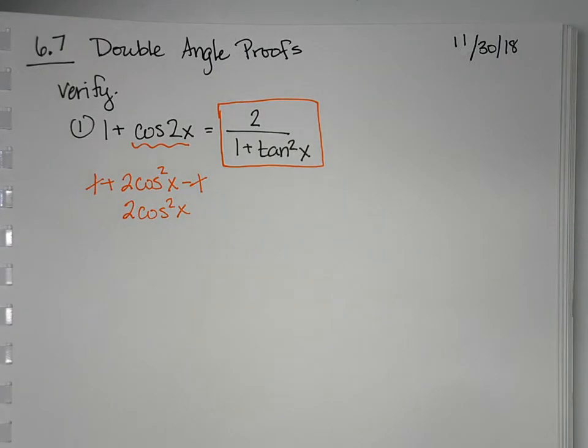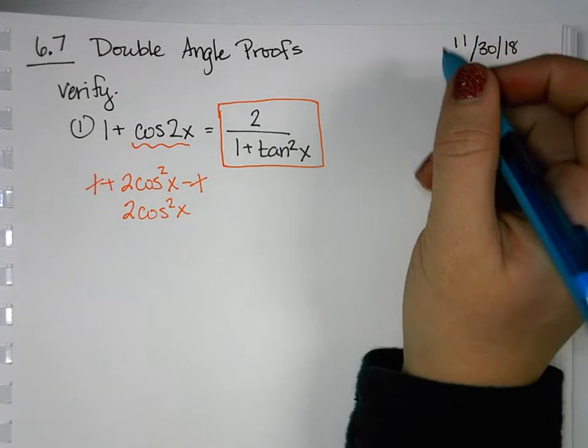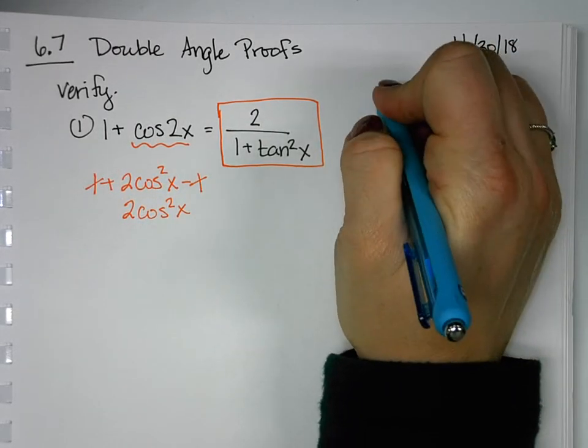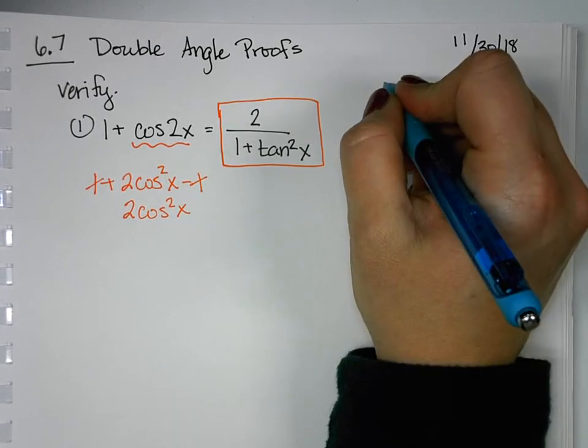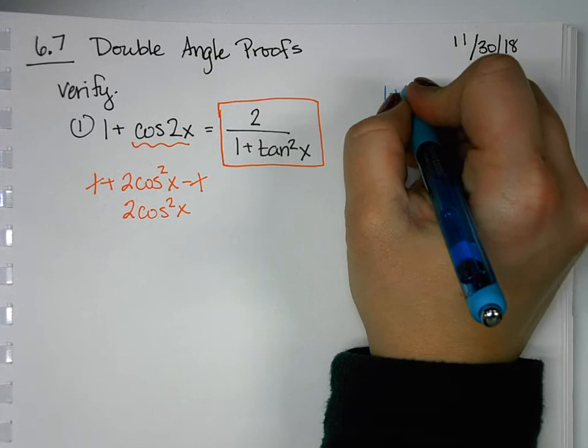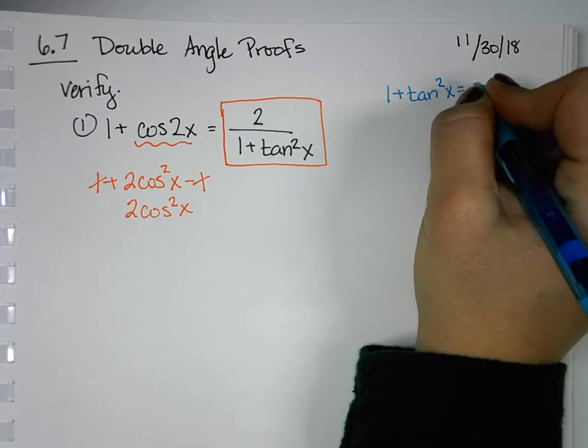Now I need to think what can I do from here. From here my brain is thinking trig identities. I need to somehow get tangent, so when I think about my trig identities, this one comes to mind.